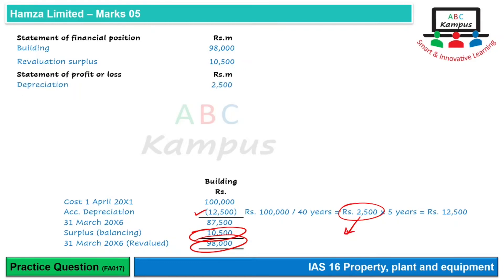Iske baad statement of comprehensive income mein, other comprehensive income mein humne likha hoga gain on revaluation, jo ke same yahi 10,500 hai.